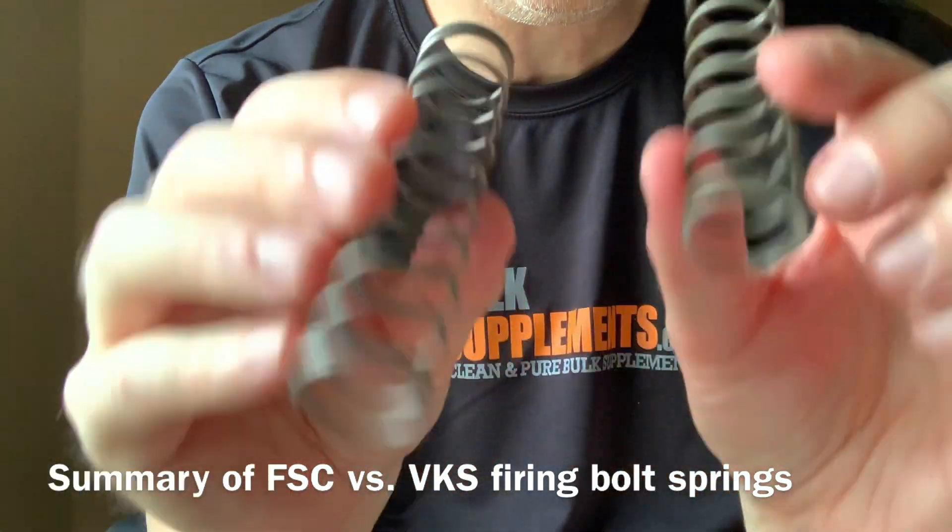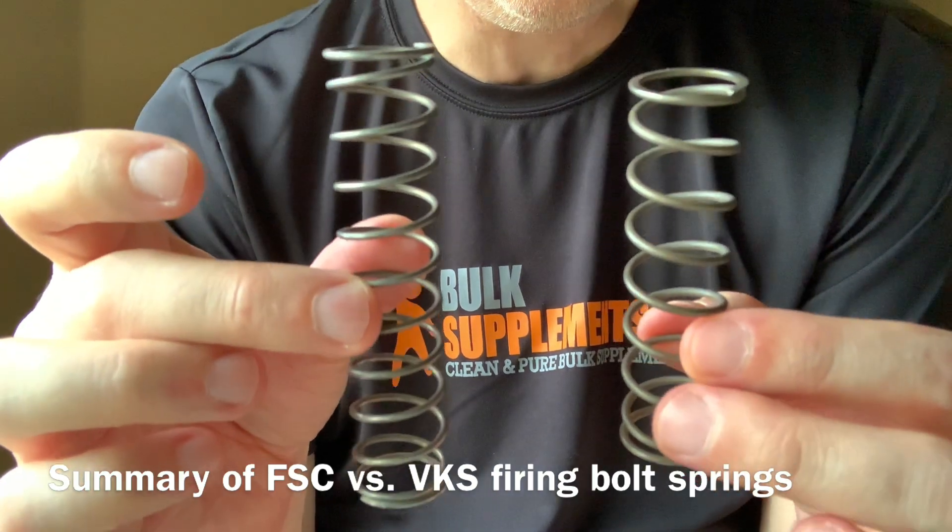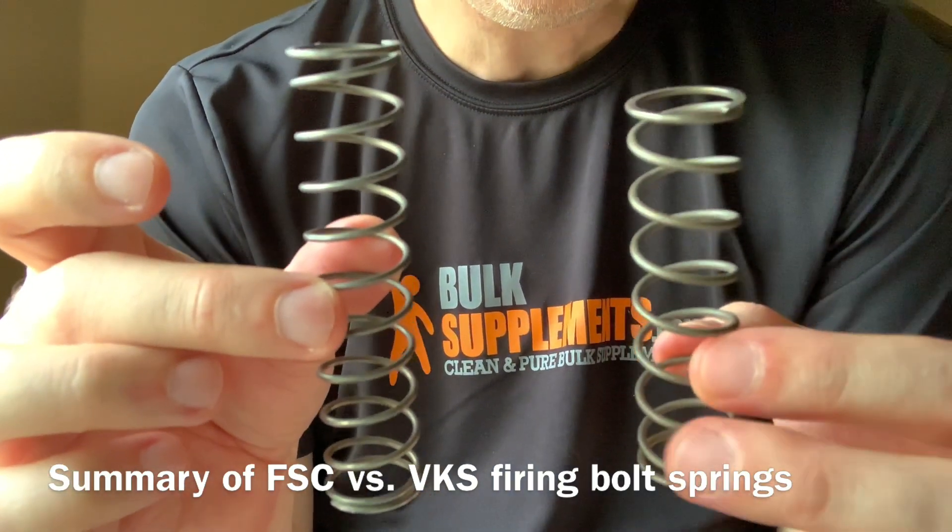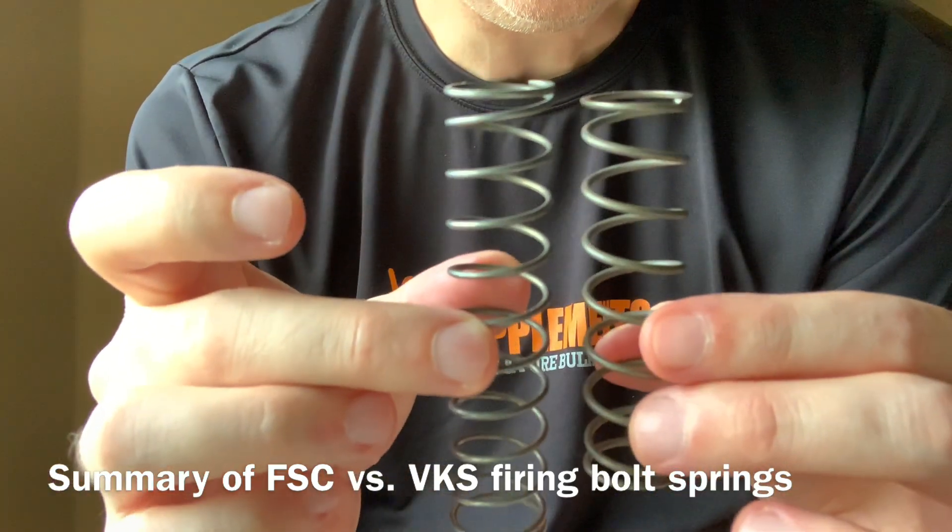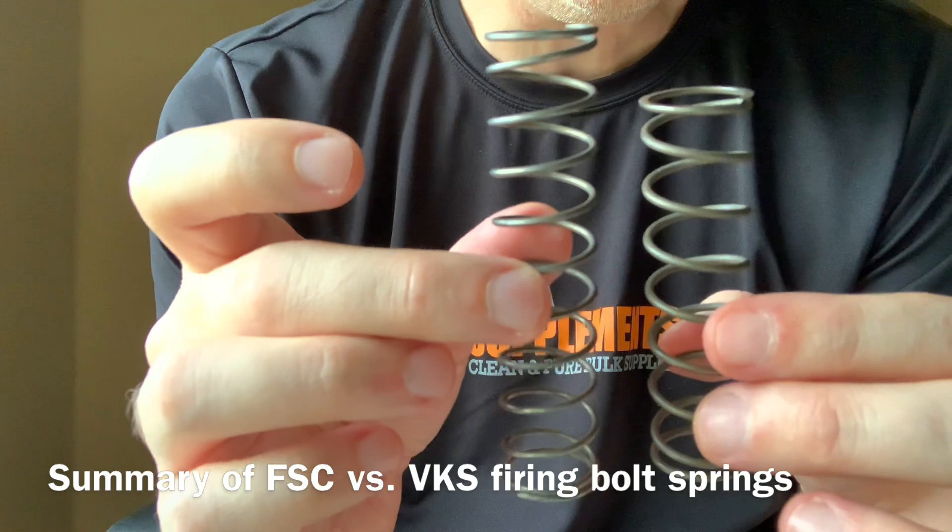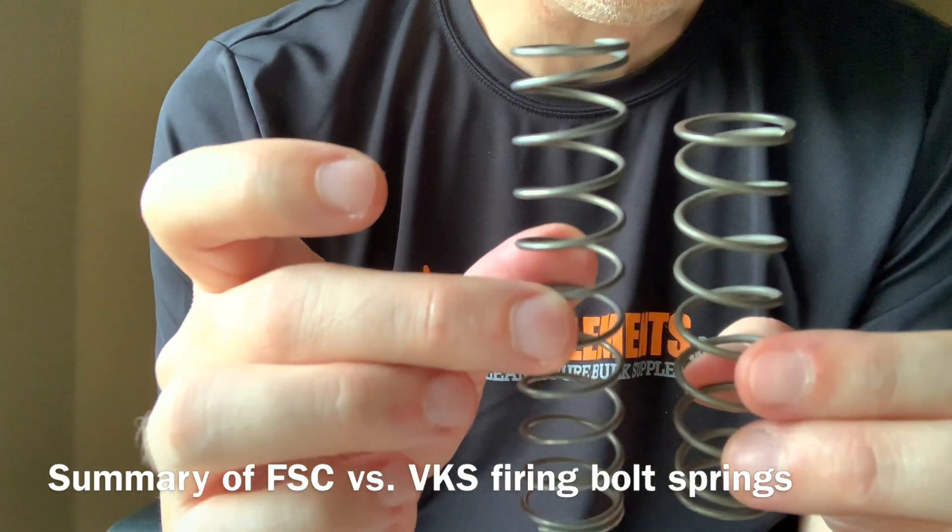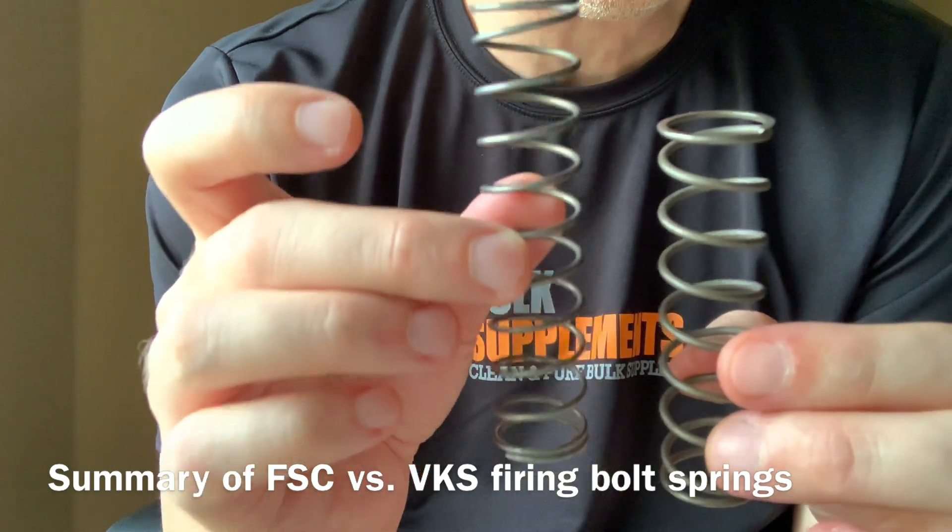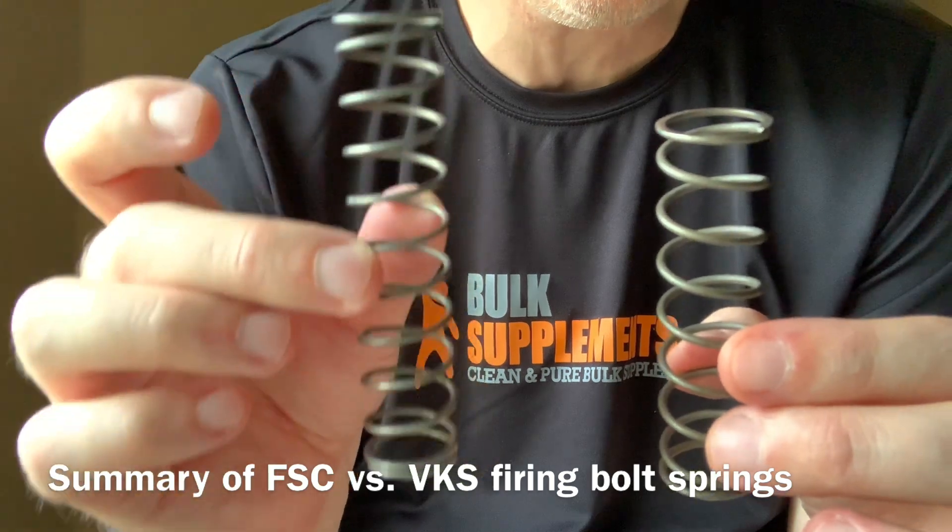So the inner diameter is not the issue. That would be the same as for an FSC spring. But as you can see, the one on the left here, the VKS spring, is shorter. And according to my measurements with a caliper, is somewhere around 0.2 millimeters, maybe 0.25 up to 0.3 millimeters thicker than the FSC spring, which is longer, has more coils.